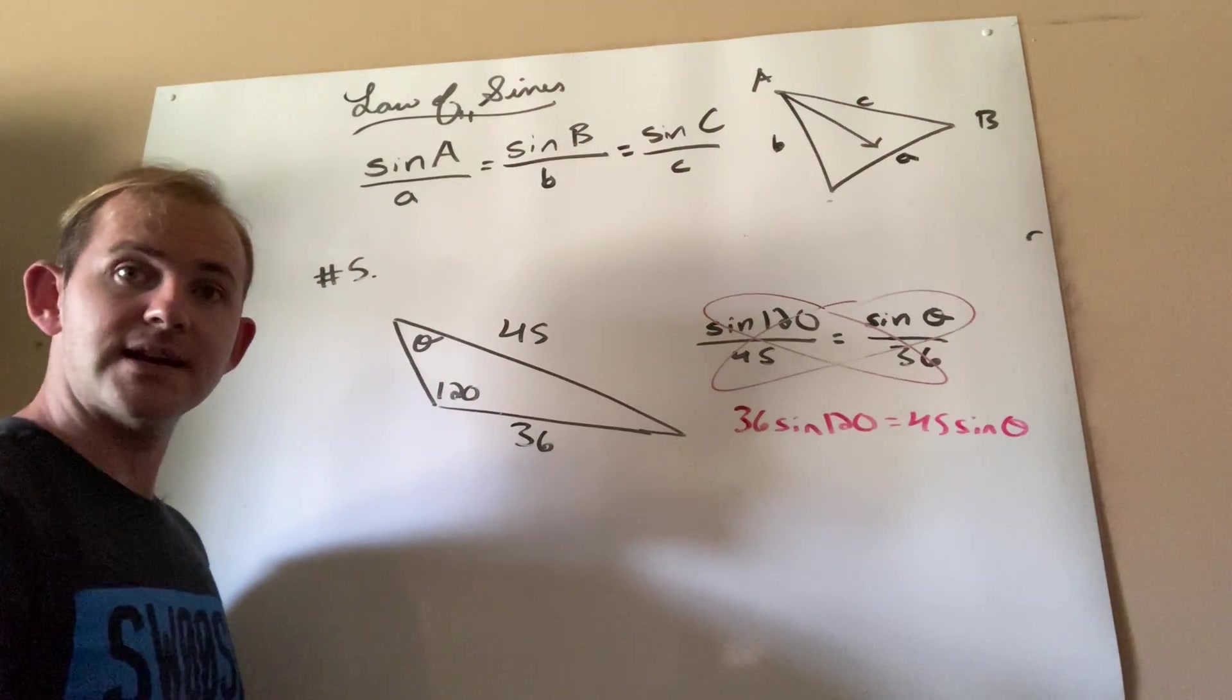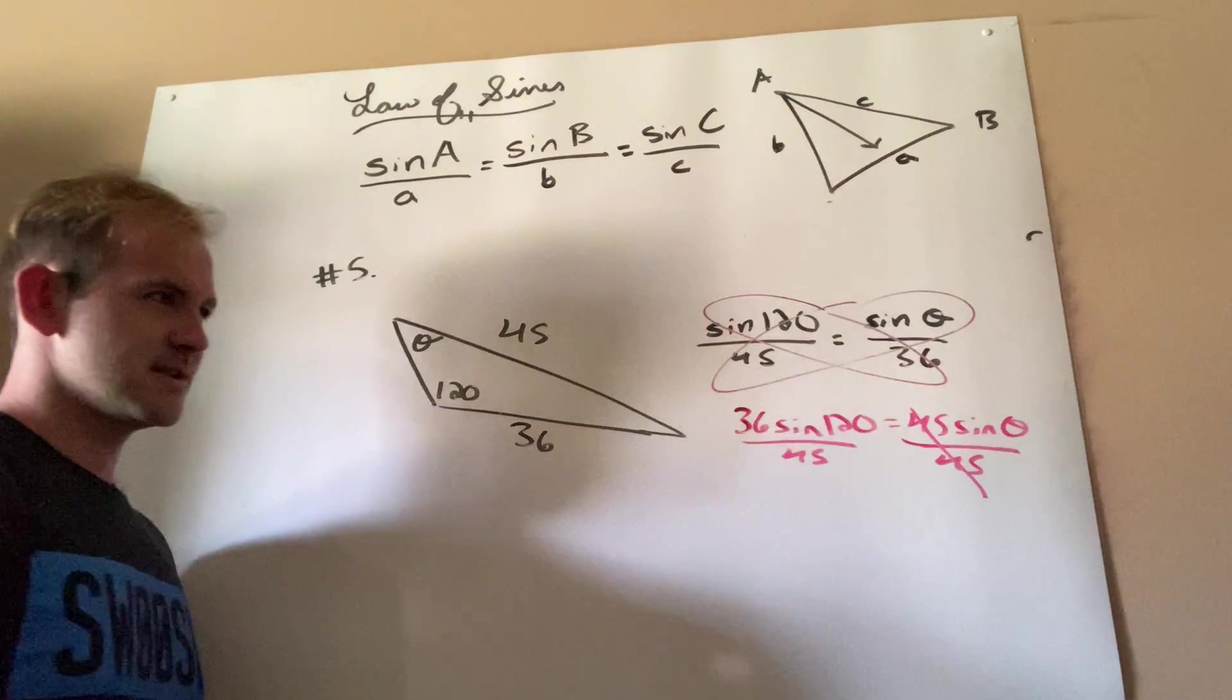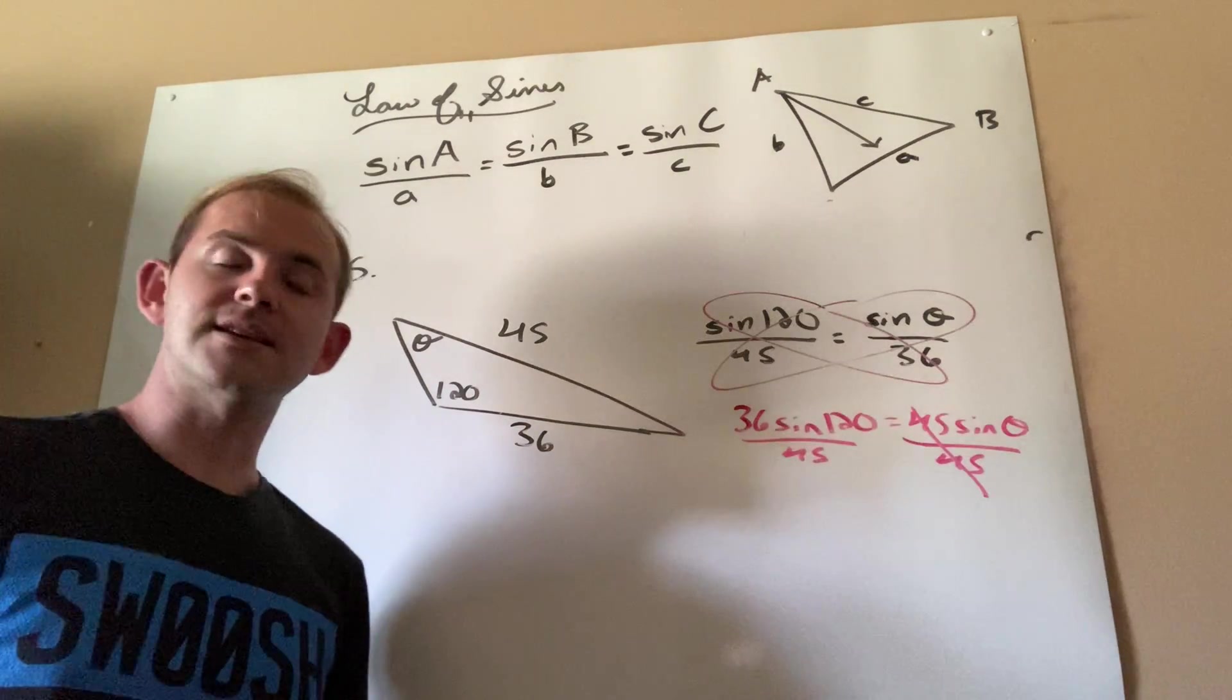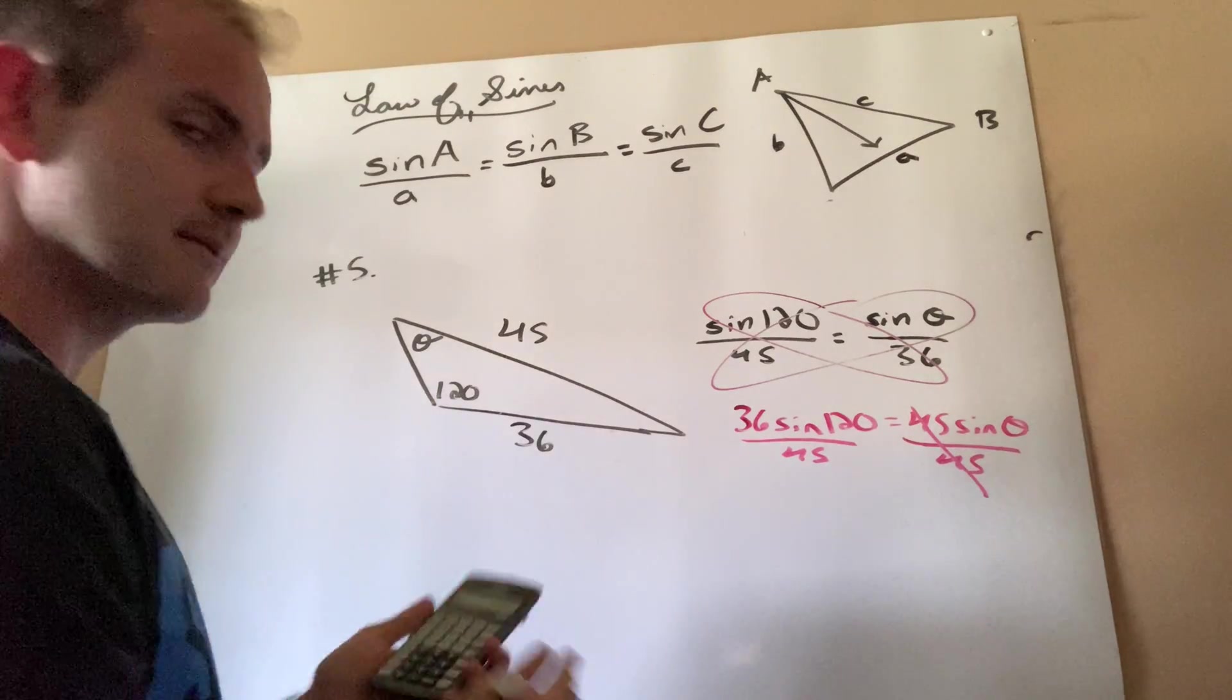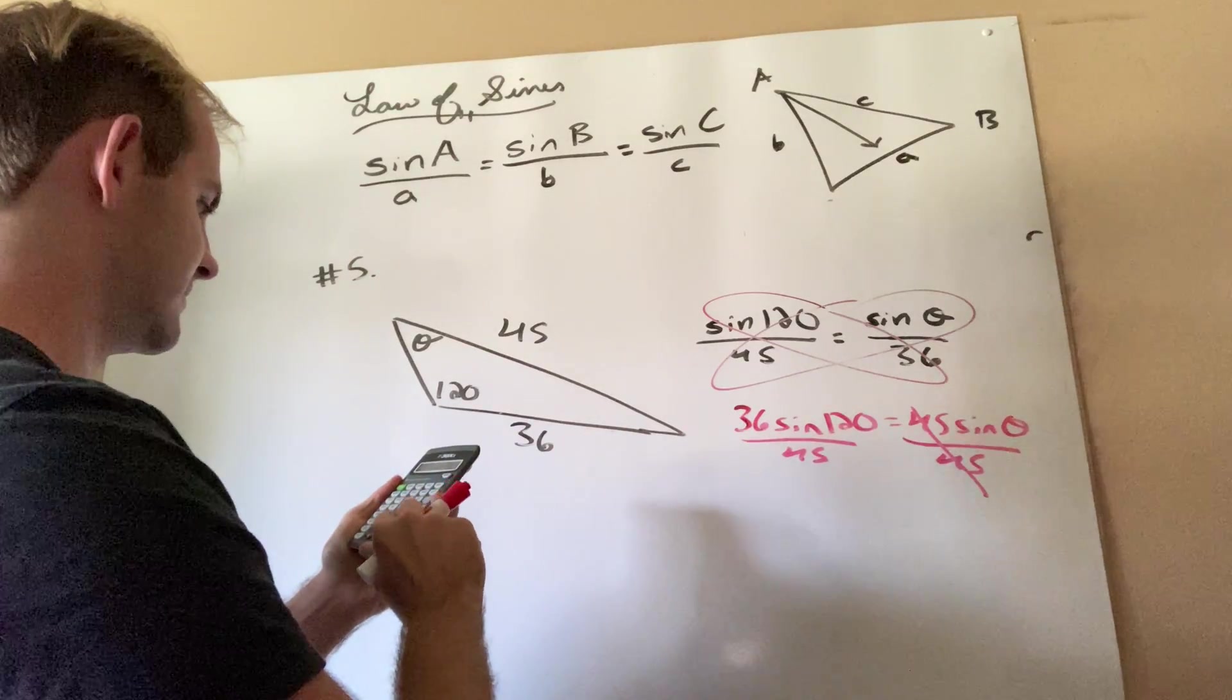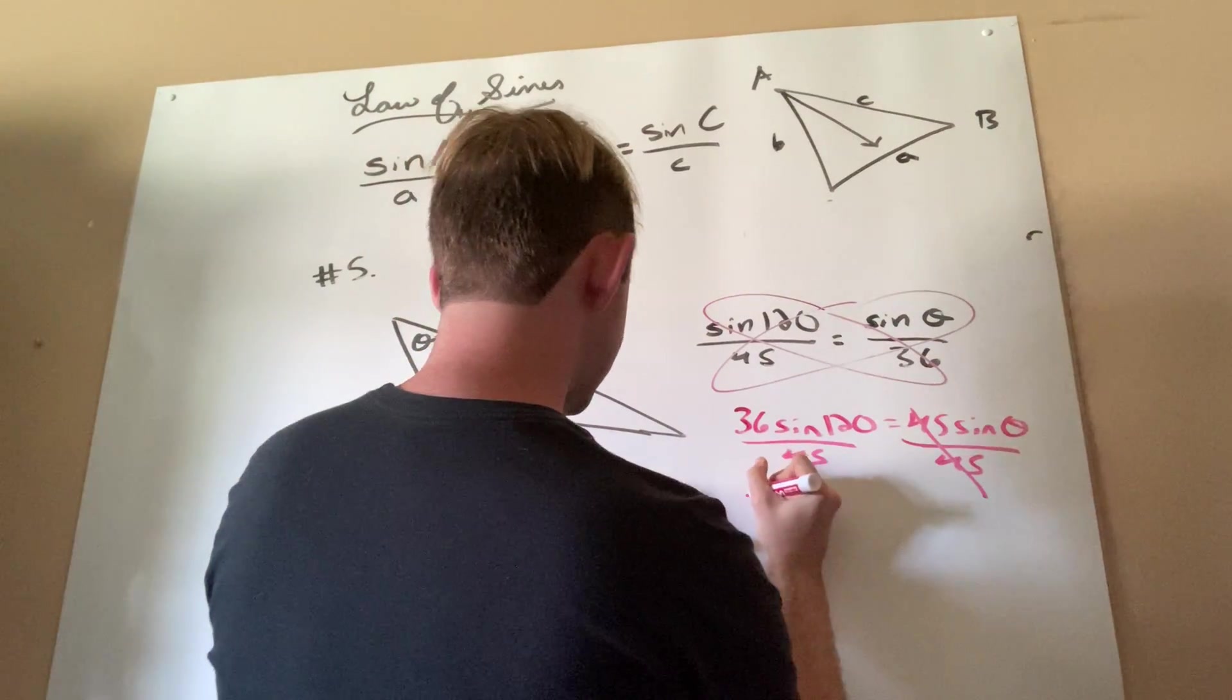So that's going to give me 36 sine 120 equals 45 sine theta. In order to get the sine theta by itself, I'm going to divide both sides by the multiplied 45. So before I try to deal with that whole sine theta mess, let's actually put this in the calculator. So I'm going to do the sine 120. So I type in 120 and I hit the sine key, then times 36. And then divided by 45.